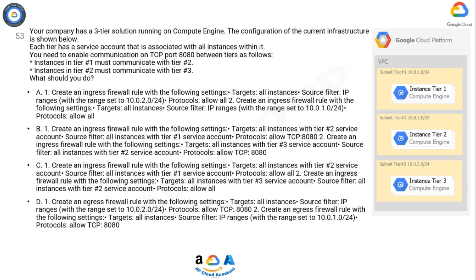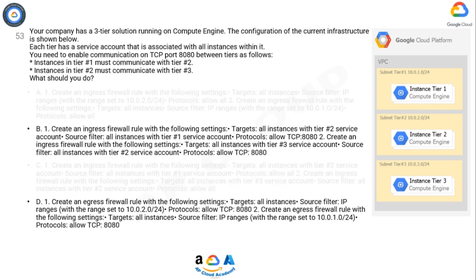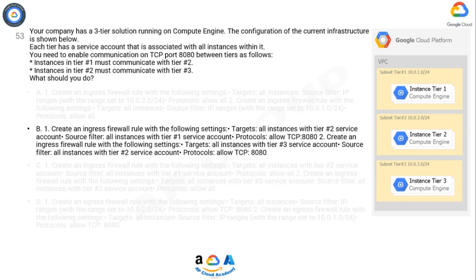The correct answer is option B. It's an easy process of elimination — two answers mention port 8080 and two mention all ports. Since we only need port 8080, we can immediately eliminate the options that allow all ports open. Of the remaining answers, one says ingress and the other egress. We know that by default egress is permitted and ingress is not, so that makes B the right choice.